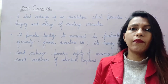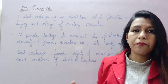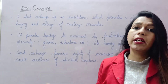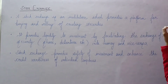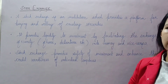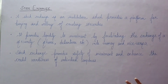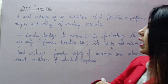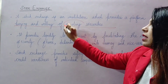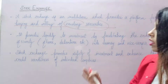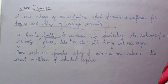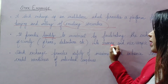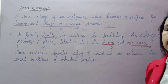The other name for the secondary market is stock exchange — it is an institution where we buy or sell existing securities. It provides liquidity, meaning you can easily convert securities into cash. It provides liquidity to investment by facilitating the exchange of securities — shares, debentures — you can convert them into money and vice versa easily.